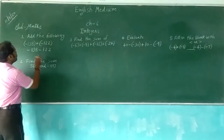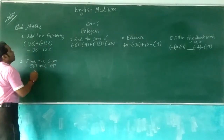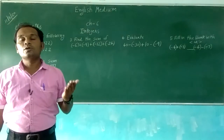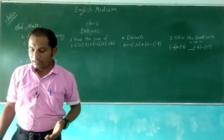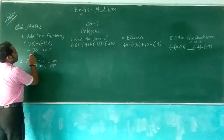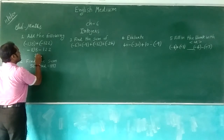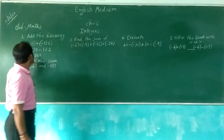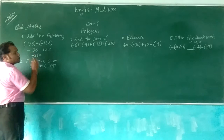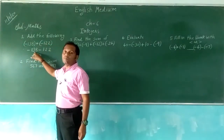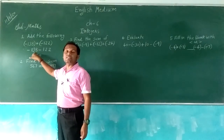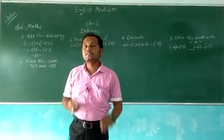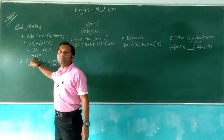We will add both numbers: 138 plus 122. You will add and keep the sign of the greater digit. So 138 plus 122 gives 260. But we will decide the sign of 260: it will be minus. Why? Because from both digits, 138 is the greater number and its sign is minus, so the answer's sign will be minus.